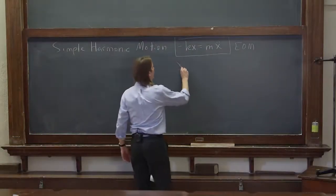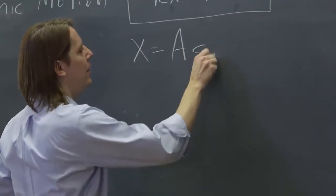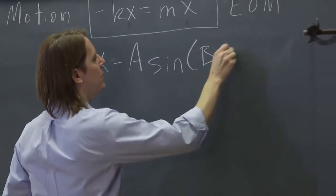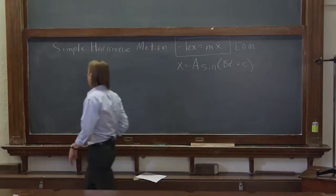So let's look at this solution: x equals A sine Bt plus c. What does it look like?